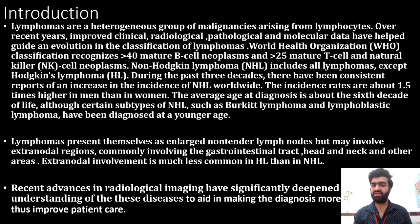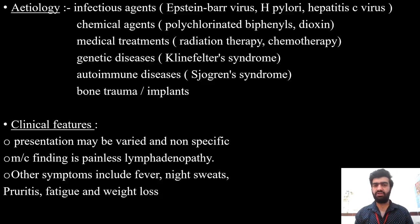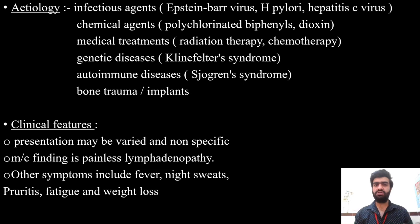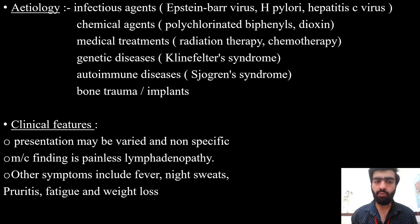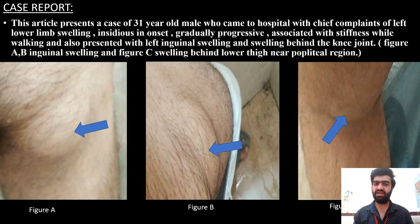Extranodal involvement is much less common in Hodgkin's lymphoma than in Non-Hodgkin's lymphoma. Recent advances in radiological imaging have significantly helped in establishing incidence of these diseases and in making the diagnosis, thus improving patient care. Etiological factors include infectious agents like Epstein-Barr virus, chemical agents, medical treatments such as radiotherapy and chemotherapy, genetic disease, autoimmune disease, and bone trauma. Clinical presentation can be non-specific. The most common finding is painless lymphadenopathy. Other symptoms include fever, night sweats, pruritus, fatigue, and weight loss.